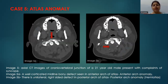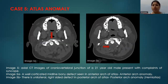This case demonstrates atlas anomaly. These are axial CT images of the craniovertebral junction of a 21-year-old male who presented with complaint of syncope. In image 5A, a well-corticated midline bony defect is seen in the anterior arch of the atlas, suggestive of an anterior arch anomaly. In image 5B, there is a unilateral right-sided defect in the posterior arch of the atlas, suggestive of posterior arch anomaly, i.e., hemiatlas.